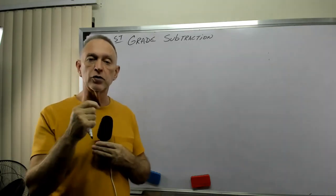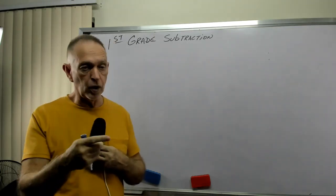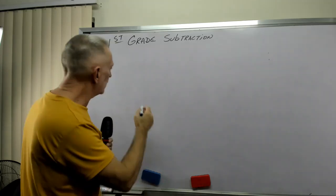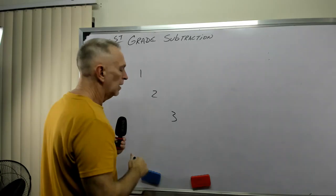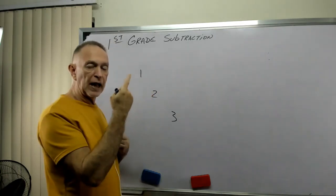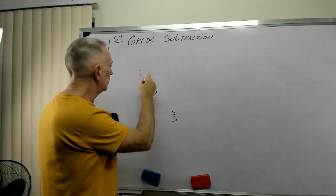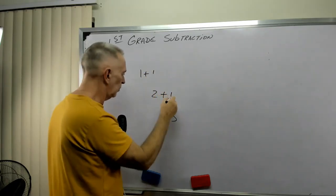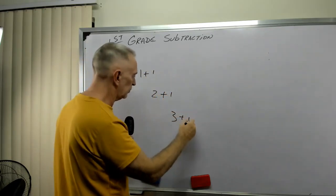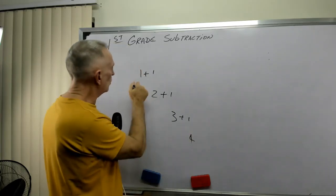We learned to count, right? One, two, three. And we said, if we have one, two, three, that we're adding one. So one plus one is two, two plus one is three, three plus one is four.